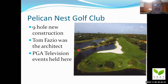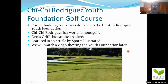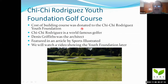Pelican Nets Golf Club was down in Bonita Beach, Florida — a nine-hole new construction. Tom Fossey was the architect, and PGA television professionals play here. This is what they call a serpentine bunker because it looks like a serpent or a snake — look how narrow it is. It guards the fairway and comes up and guards the edge of the green. We're also not going to be able to watch a video about Chichi Rodriguez's golf course, built in Clearwater, Florida. The entire cost of building it was donated to the Chichi Rodriguez Youth Foundation. He's a famous golfer — Dennis Griffiths was the architect — and when I built it in 1988 and 1989, it was featured in an article in Sports Illustrated. This whole golf course was built and donated so kids could play on it free.